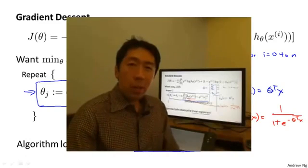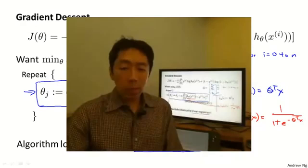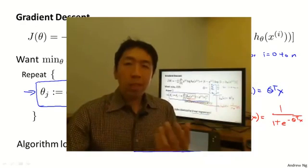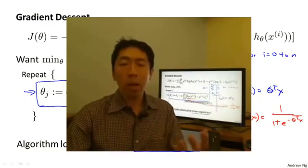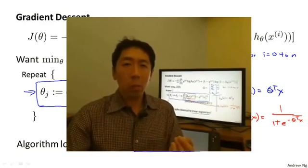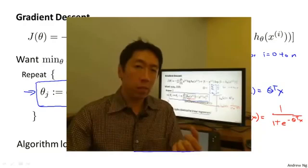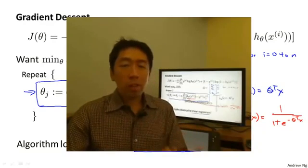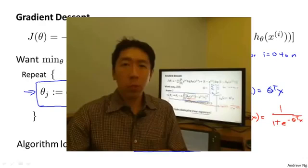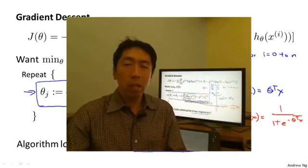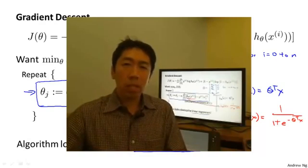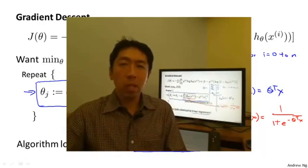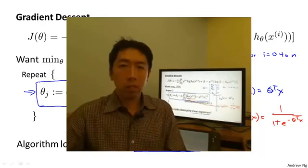So now you know how to implement gradient descent for logistic regression. There was one last idea that we had talked about earlier for linear regression, which was feature scaling. We saw how feature scaling can help gradient descent converge faster for linear regression. The idea of feature scaling also applies to gradient descent for logistic regression. And if you have features that are on very different scales, then applying feature scaling can also make gradient descent run faster for logistic regression.